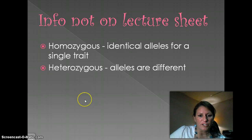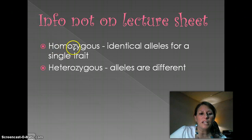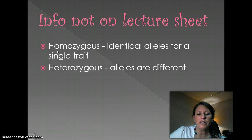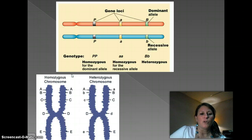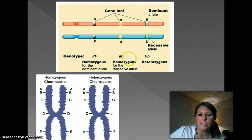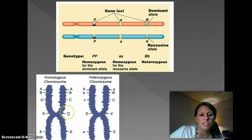From here on out, this information is not on the lecture sheet, but I strongly recommend writing it down. Homozygous — the prefix homo means the alleles are identical. So big T big T or little t little t — those are homozygous. Heterozygous — one capital and one lowercase, like big T little t — the alleles are different. To illustrate: two big P's is homozygous dominant; two little a's is homozygous recessive; big B little b is heterozygous. It could also be written as two capital A's, two capital D's — as long as they're the same. Heterozygous would be big A little a, or little E big E — same letter, one capital, one lowercase.